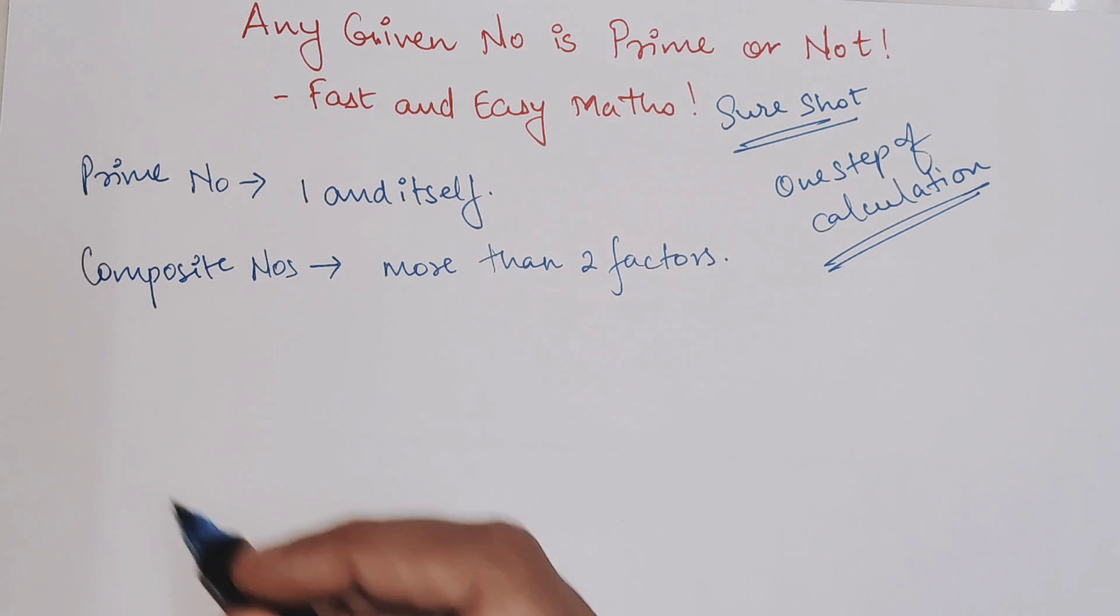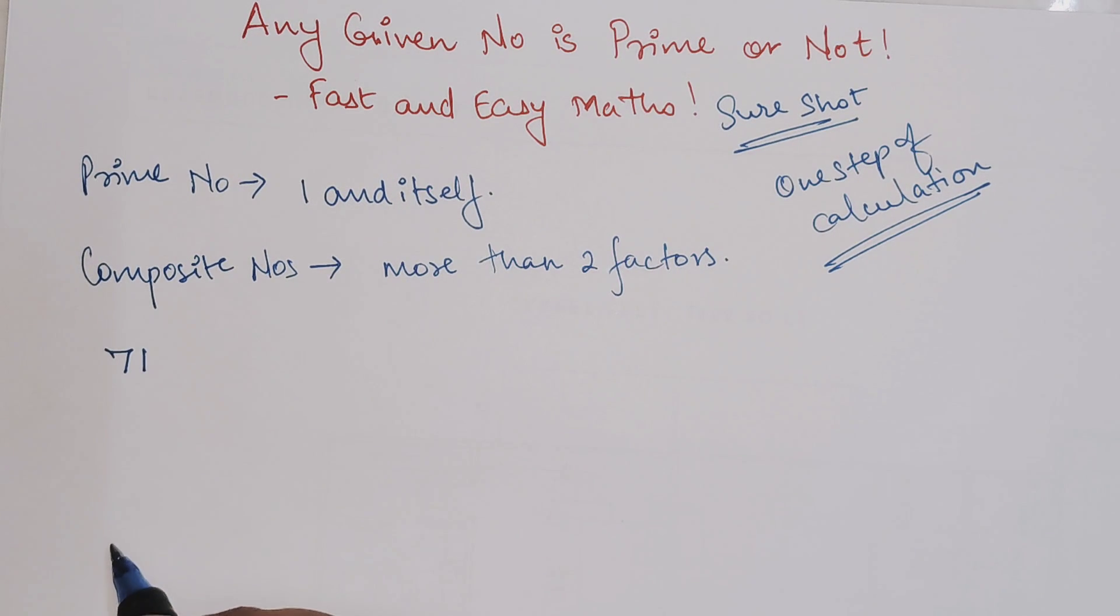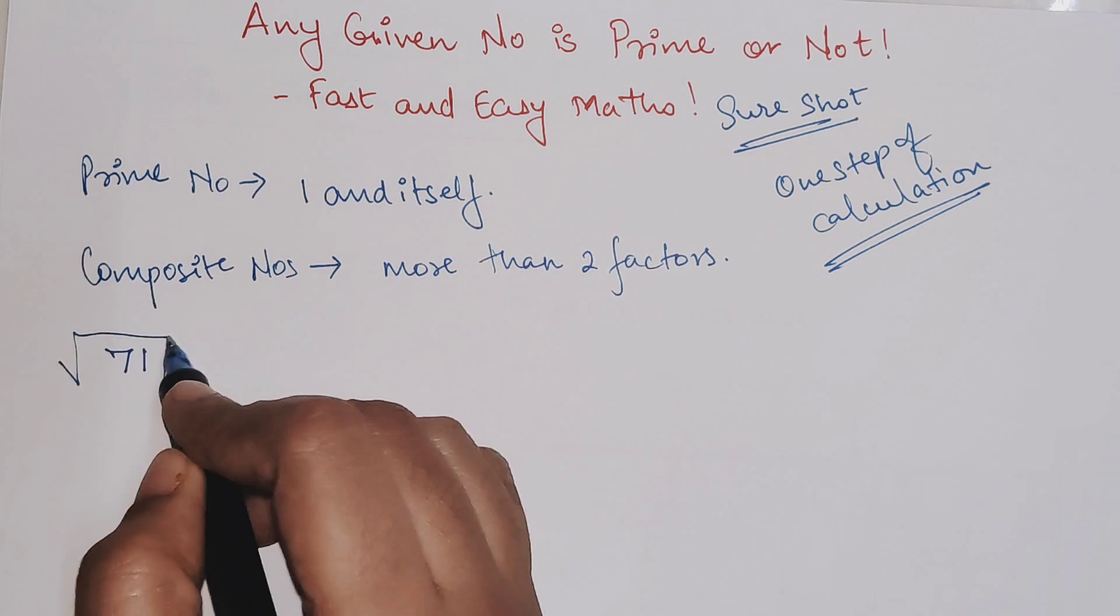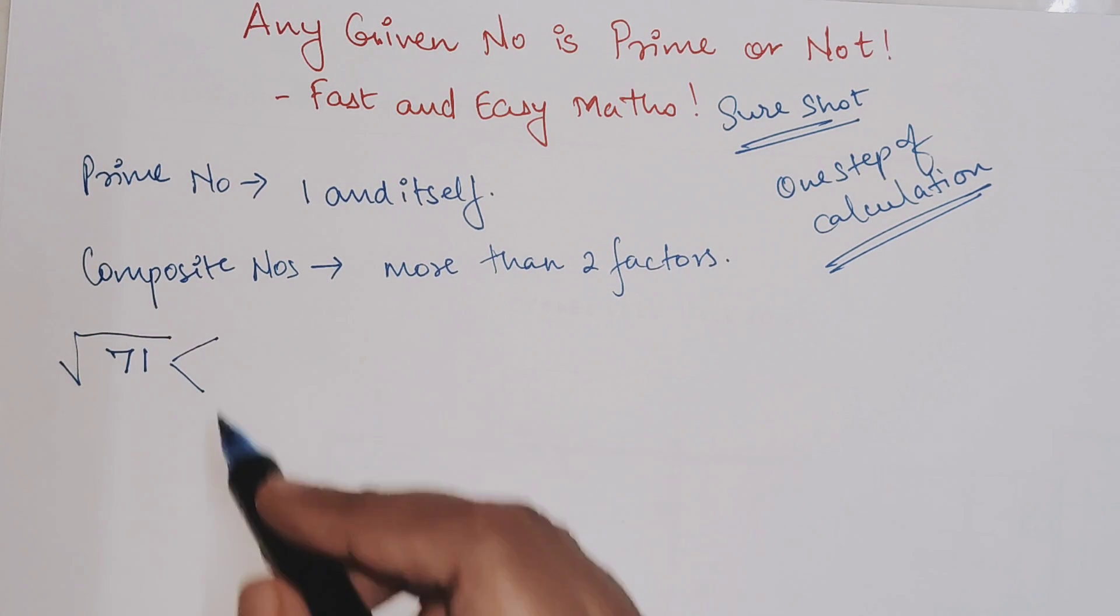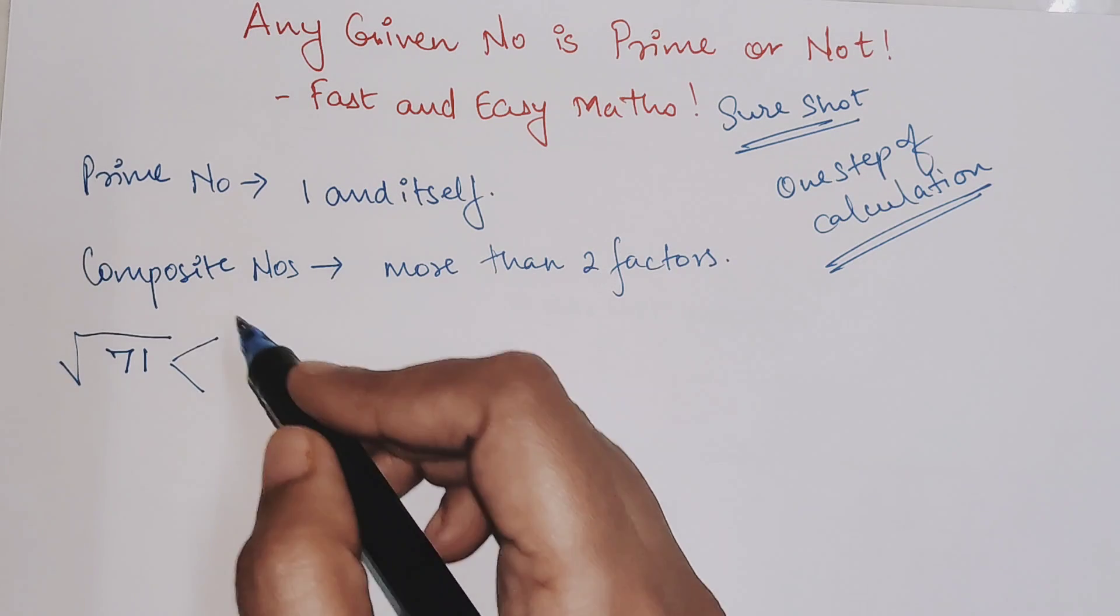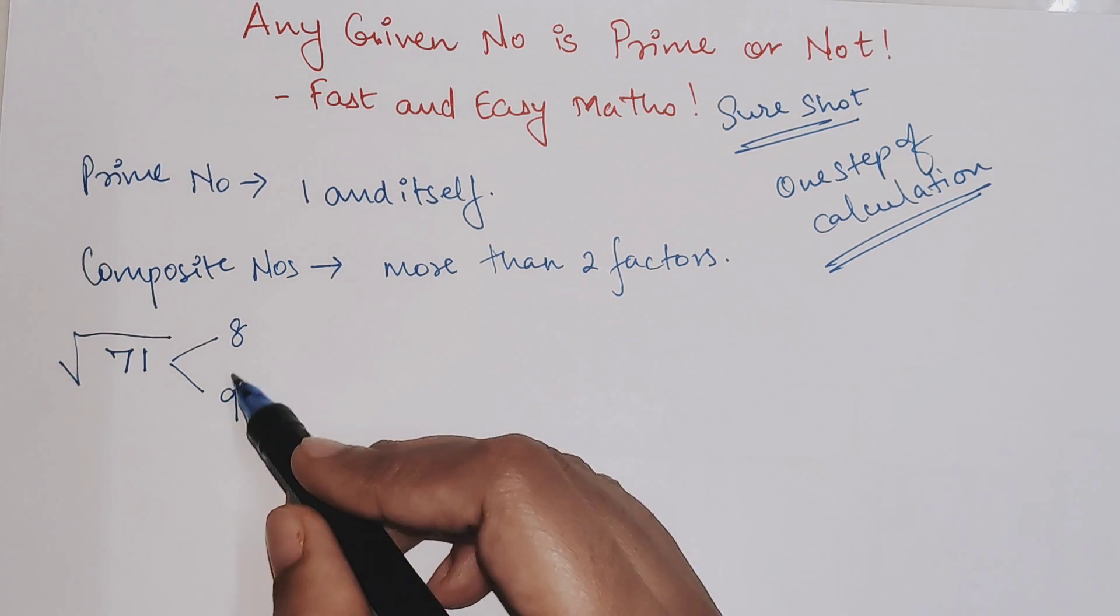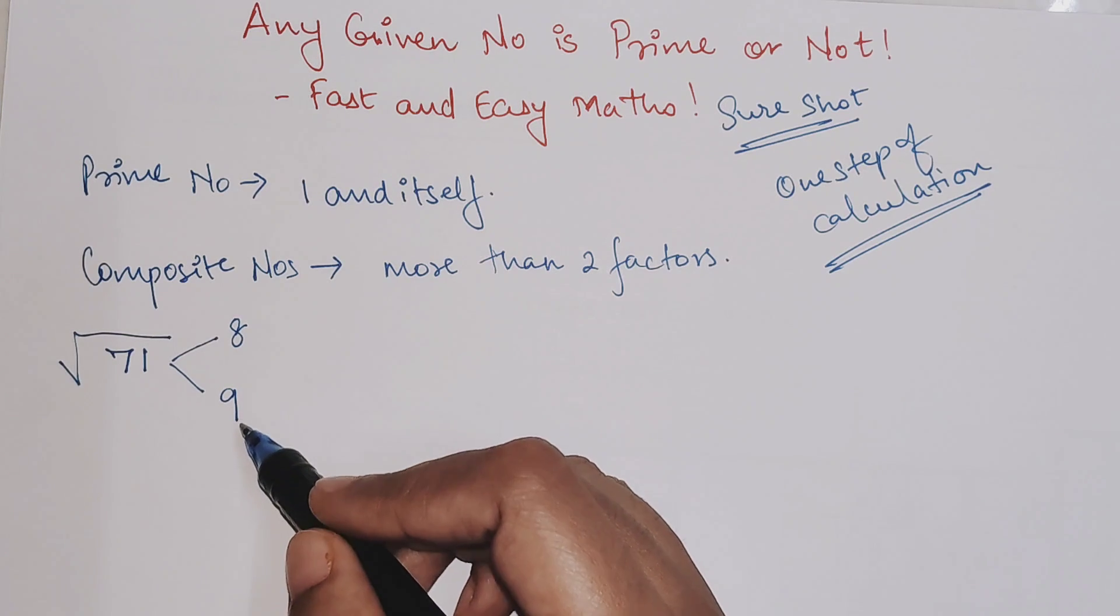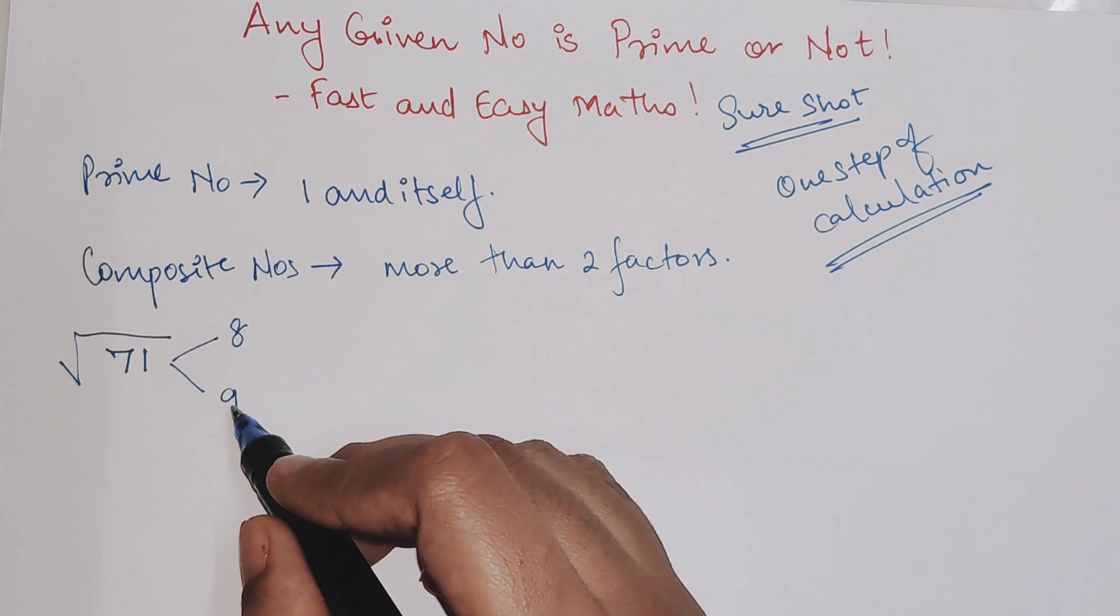Let's take an example. If the number given to you is 71 and we had to figure out whether this is prime or not, first take the square root. This is lying between 8 and 9. Pick the higher number and write down all the prime numbers up to 9: 2, 3, 5, and 7.